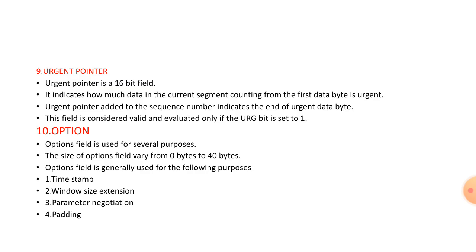Urgent pointer is a 16-bit field. It is valid and evaluated if the URG bit is set to 1. Options are used for several purposes such as timestamp, window size extension, parameter negotiation, and padding. The size of the option varies from 0 bytes to 40 bytes.